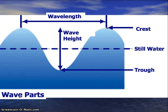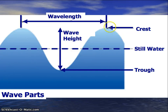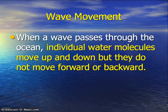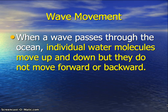Here's a diagram of the different parts of a wave. You can see the wave height from the crest to the trough, the wavelength, and then the crest as the top part and the trough as the bottom. When a wave passes through the ocean, individual water molecules move up and down, but they don't move forward or backward.